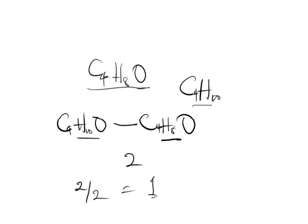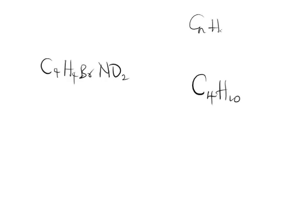Let's consider the next example. Calculate the IHD for C4H4BrNO2. For this, the corresponding alkane will be C4H10, since we know the formula CnH2n+2, so 2 times 4 is 8, plus 2 equals 10.